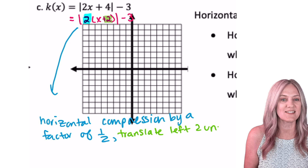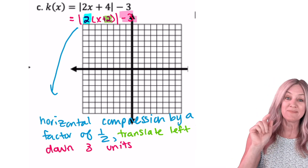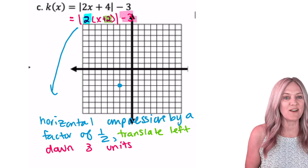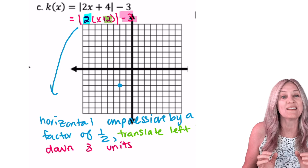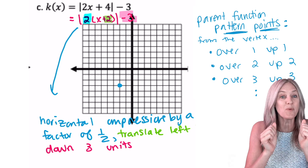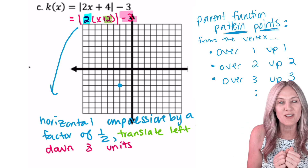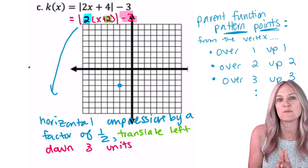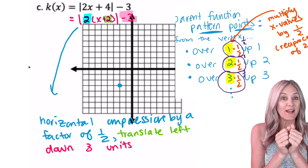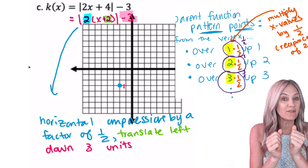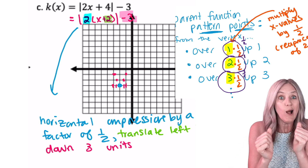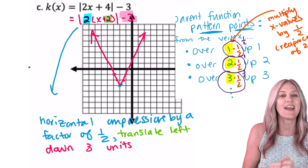Translating left 2 units, and minus 3 at the end means down 3 units. The new vertex is at negative 2, negative 3. Pattern points from the parent function go over 1, up 1, then over 2, up 2. But this one has been horizontally compressed by a factor of one-half, so x coordinates are multiplied by one-half. Instead of over 1, I go over one-half, up 1. Over 2 becomes over 1, up 2.